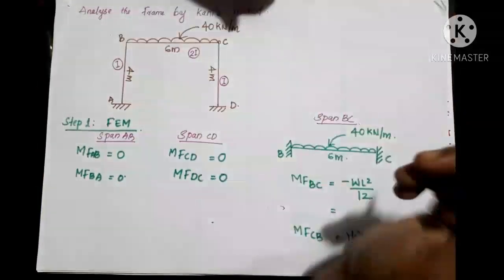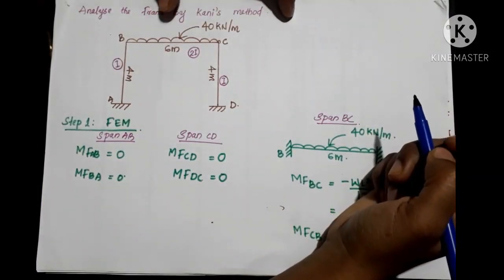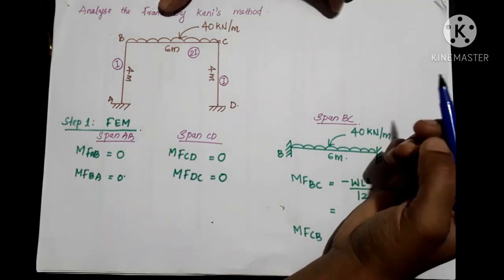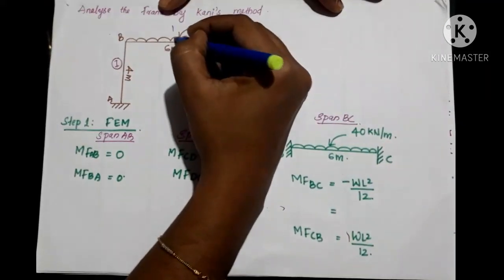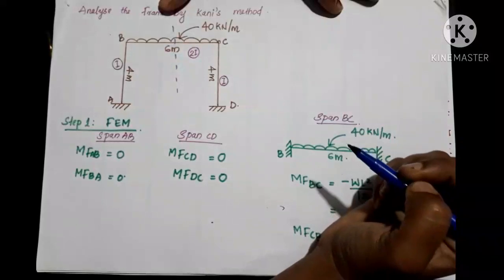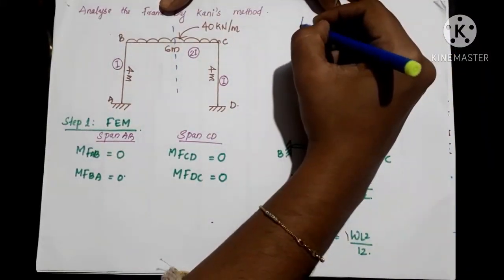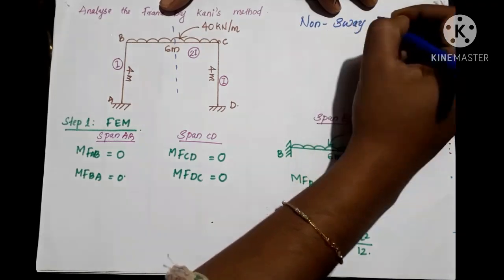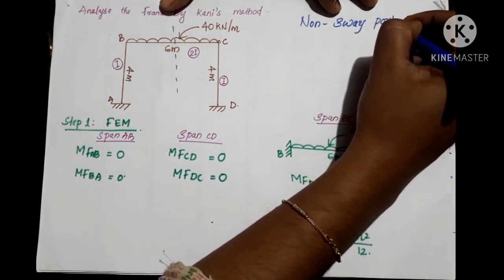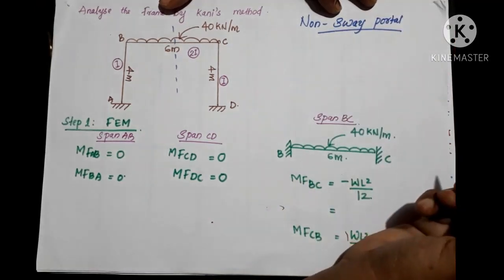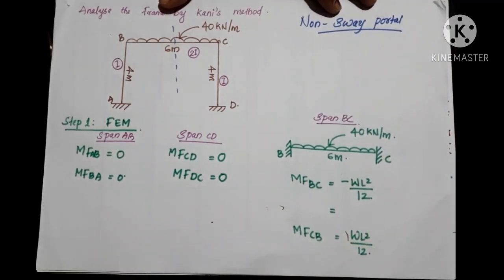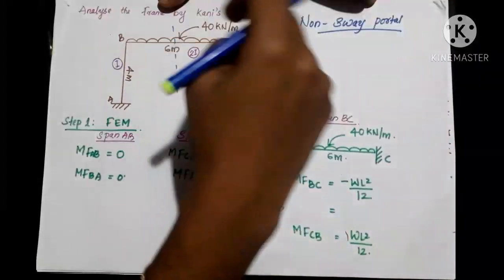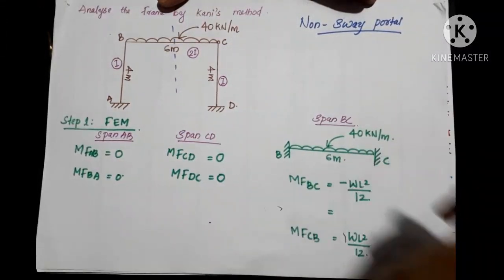Now, if you can see this figure, there is a symmetrical portal frame. Symmetrical and non-sway are not the same. This is a non-sway rigid portal frame. The non-sway portal frame can be solved like a beam — there are no extra steps.